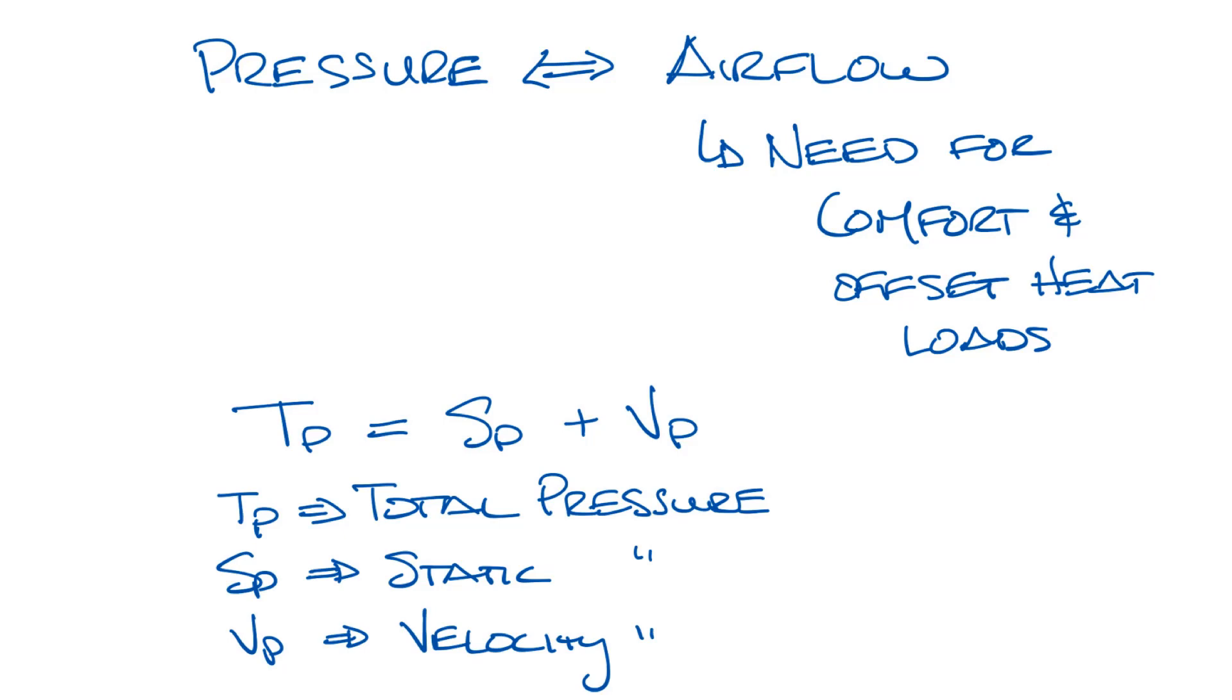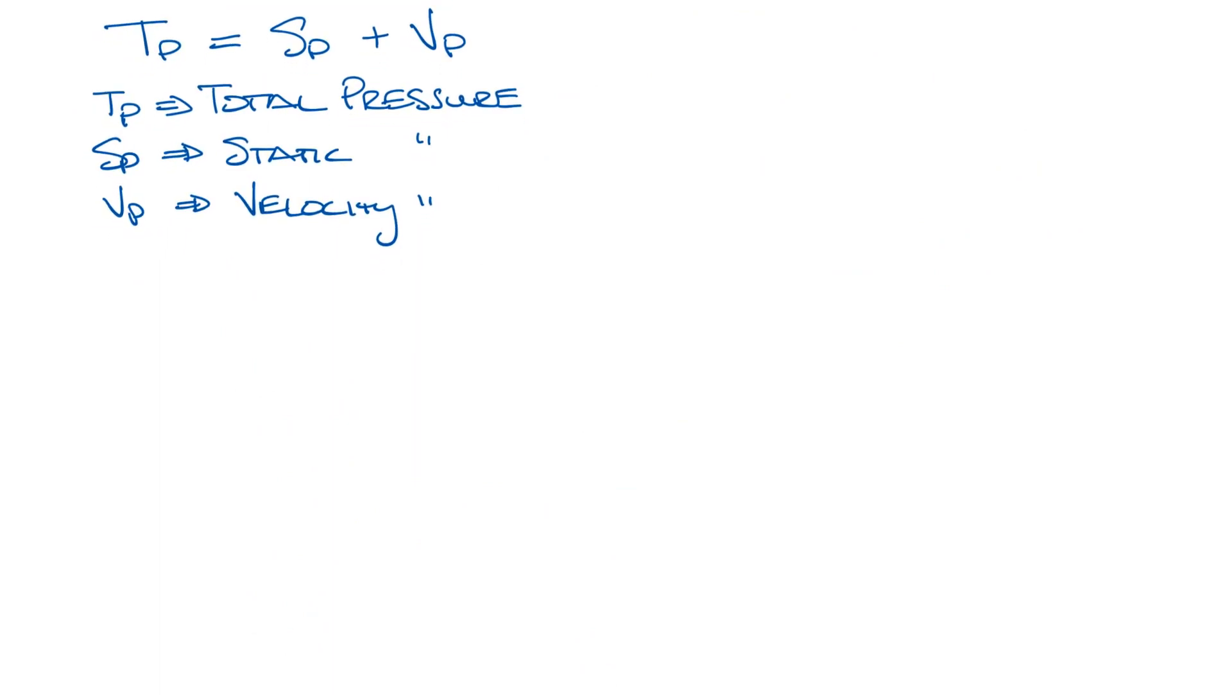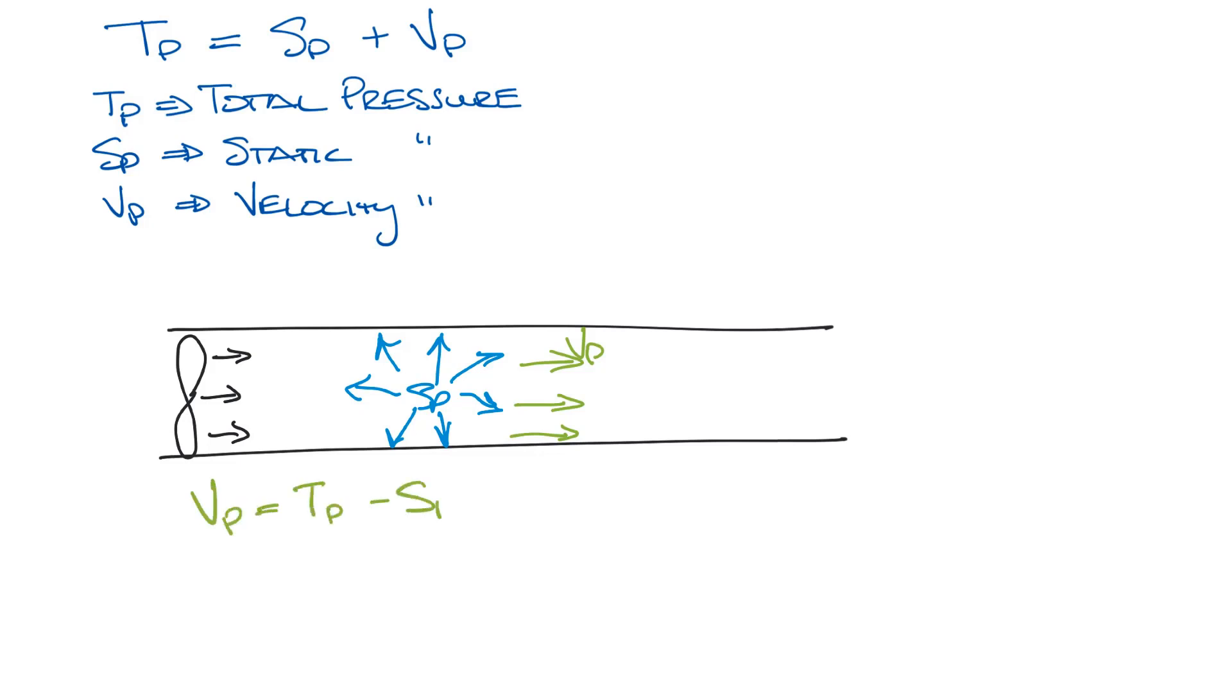Let's draw some ductwork with air moving through it. Static pressure is exerted in all directions, while velocity pressure is only exerted in the direction of airflow. The thing is, velocity pressure is hard to measure directly because there's static pressure in the direction of airflow as well. So we usually use total pressure and static pressure to calculate velocity pressure. Velocity pressure equals total pressure minus static pressure.